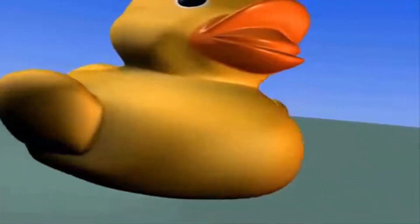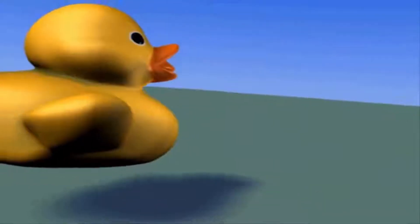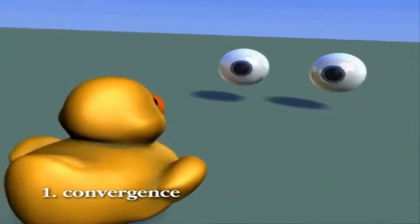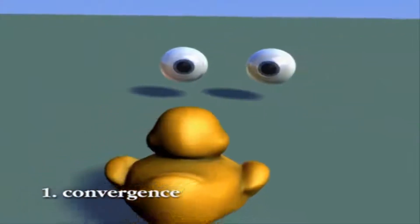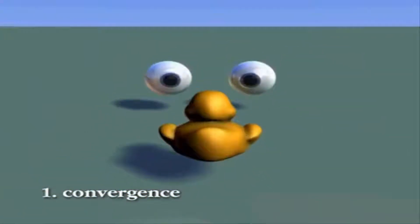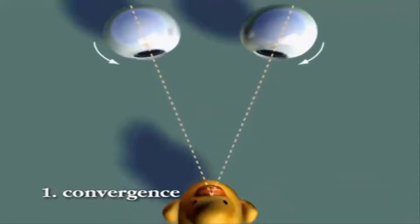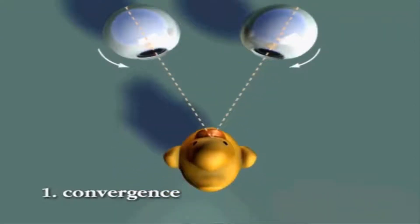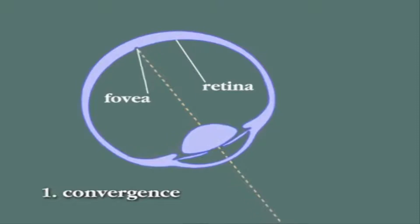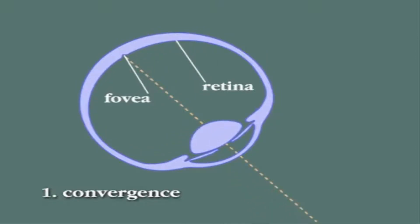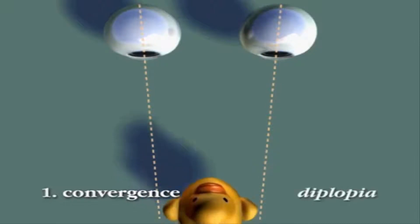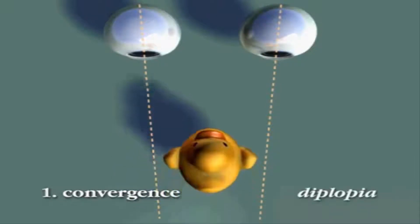First, as an object approaches, both eyes track it in a process called convergence. The size of the eyes in this example has been greatly exaggerated so that the subtle movement that takes place during convergence can be seen. Convergence of the eyes keeps the image of the object of interest centered on the fovea, the part of the retina where resolution is highest. If the eyes do not converge appropriately, diplopia, or double vision, occurs.